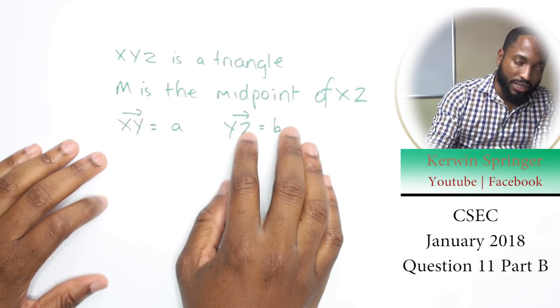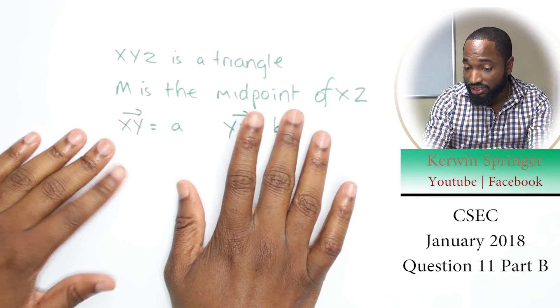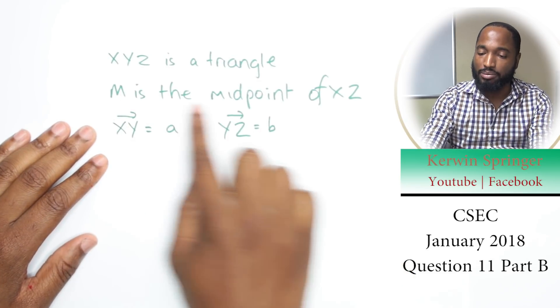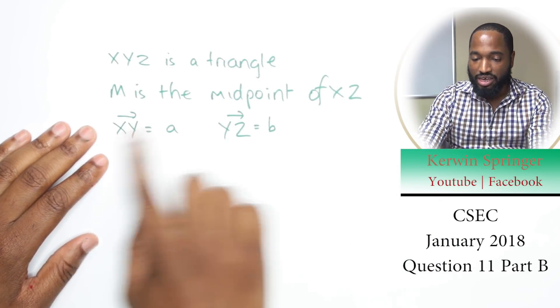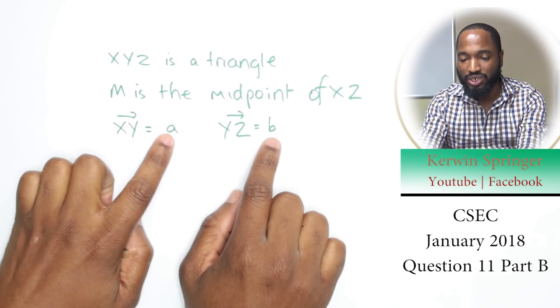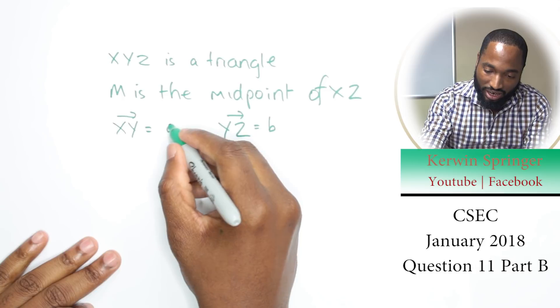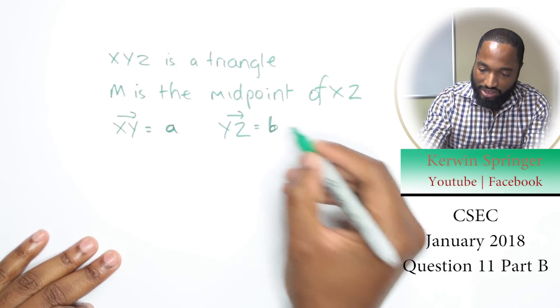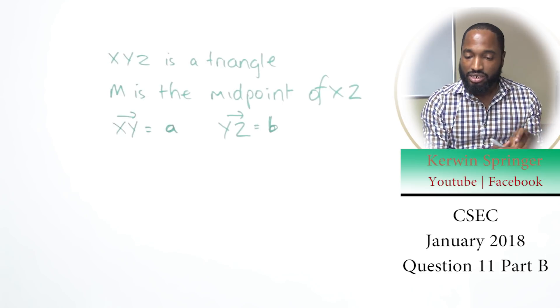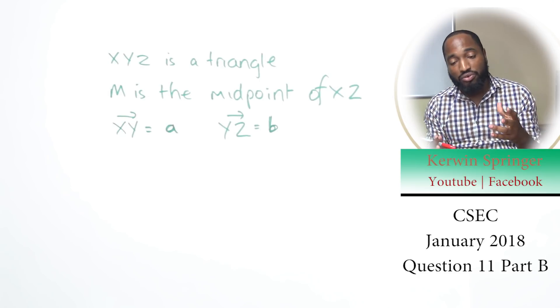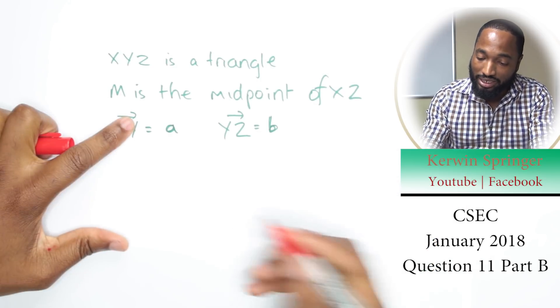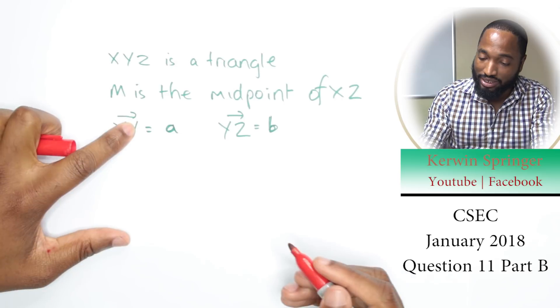This is part D of the vectors question. XYZ is a triangle, M is the midpoint of XZ. Vector XY is equal to a, and vector YZ is equal to b. You can label vectors using common letters. What is the golden rule when starting with vectors? Draw a sketch. So XYZ—let's just make our triangle and call it XYZ.